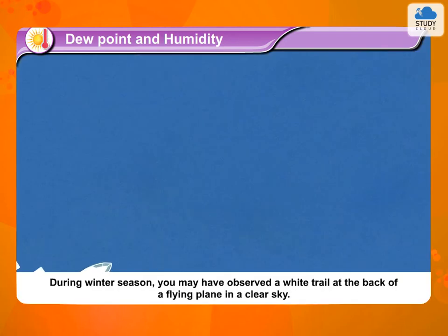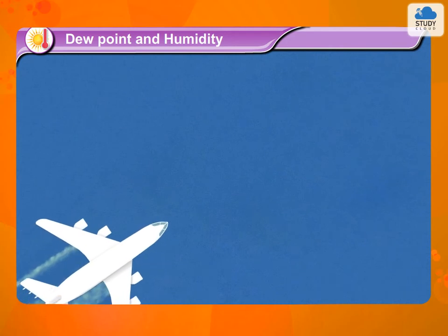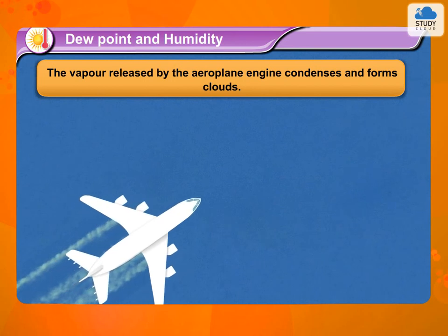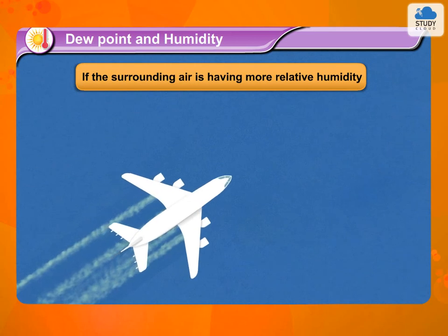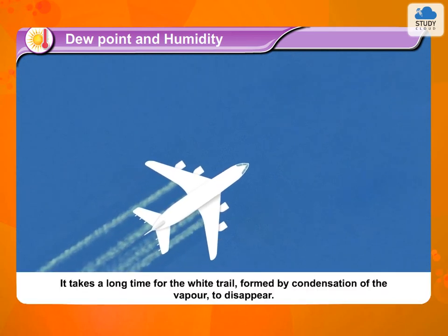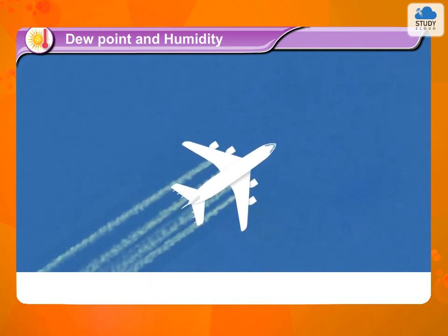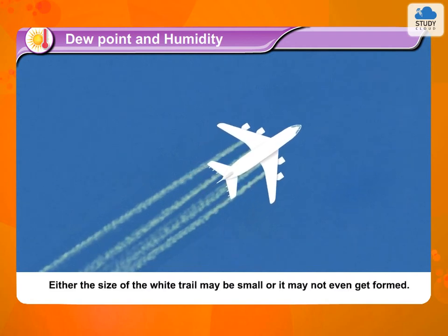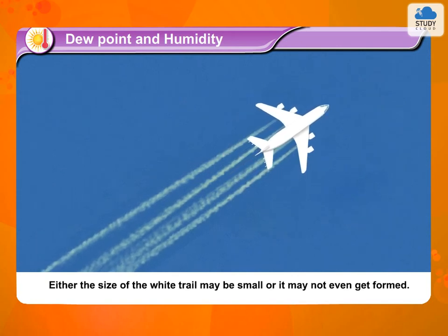During winter season, you may have observed a white trail at the back of a flying plane in a clear sky. As the plane flies, the vapor released by the airplane engine condenses and forms clouds. If the surrounding air has more relative humidity, it takes a long time for the white trail formed by condensation of the vapor to disappear. If the relative humidity of the surrounding air is less, either the size of the white trail may be small, or it may not even get formed.